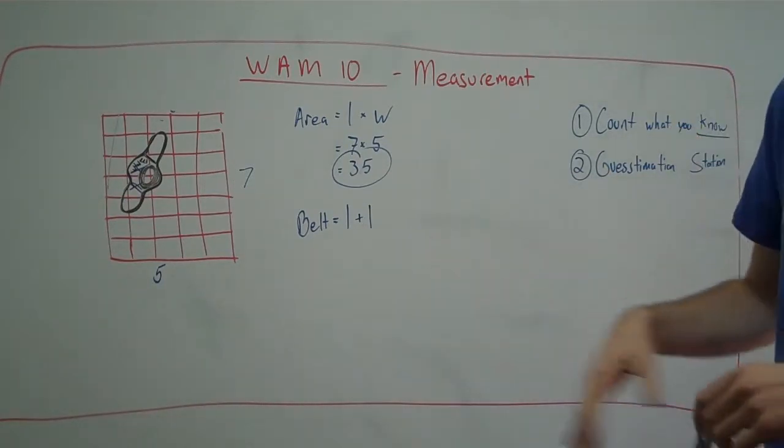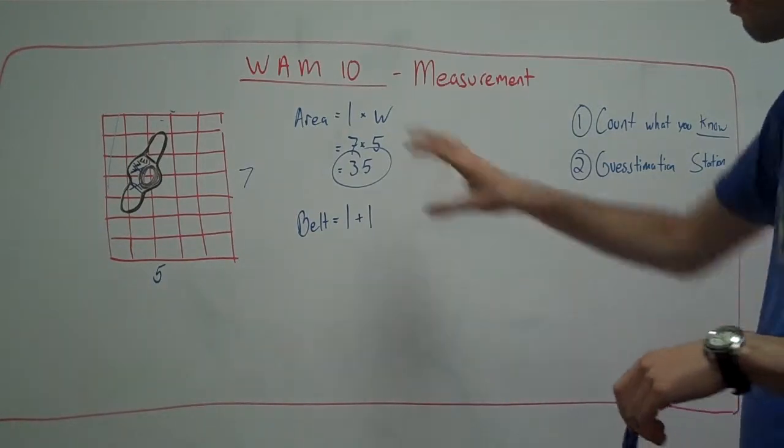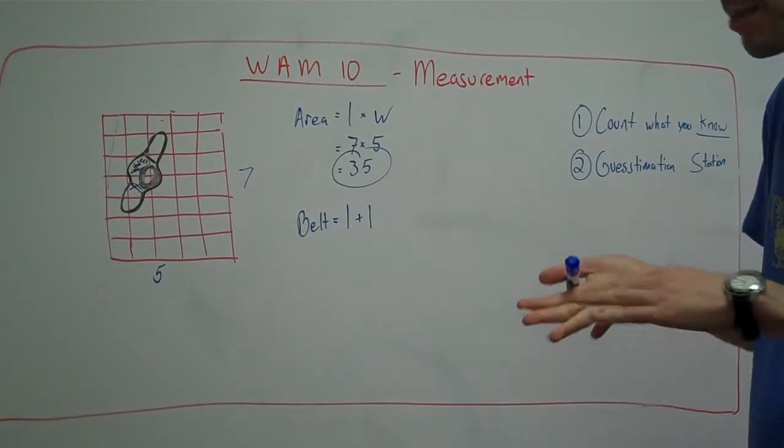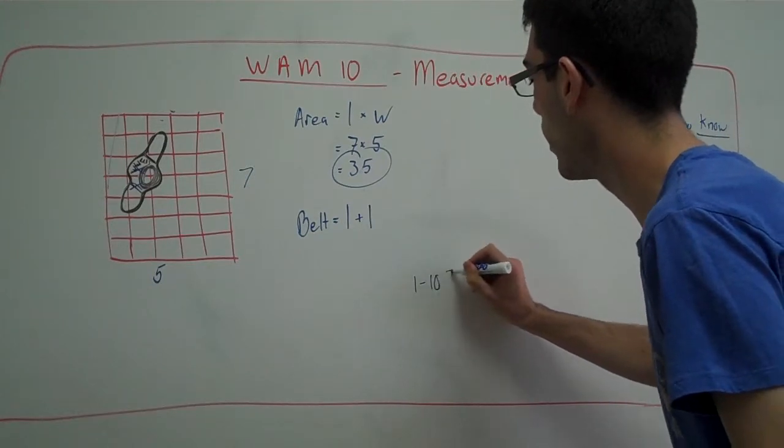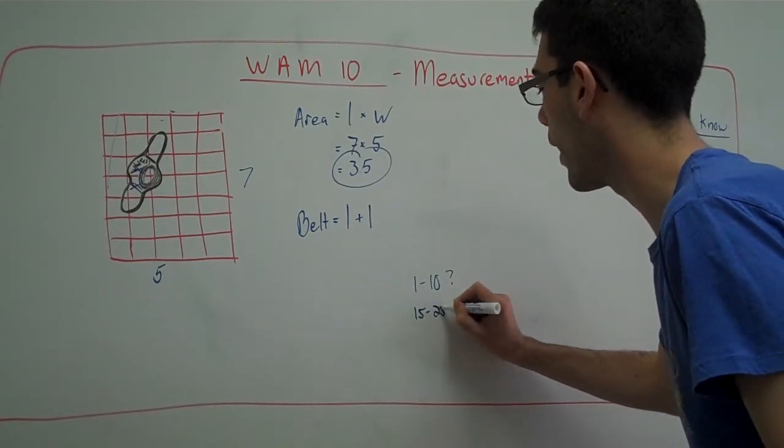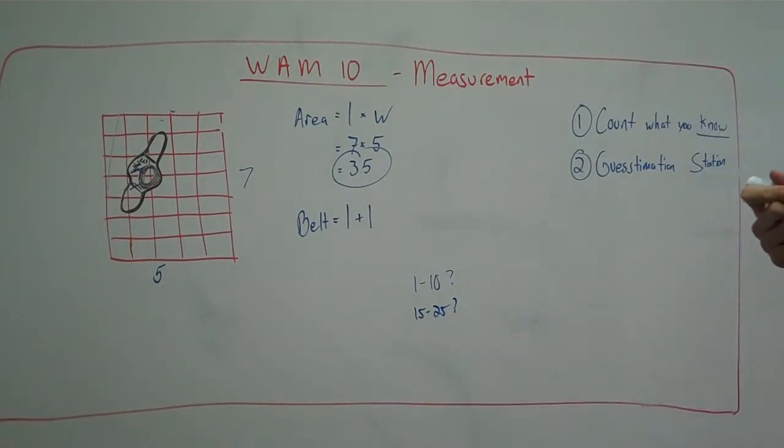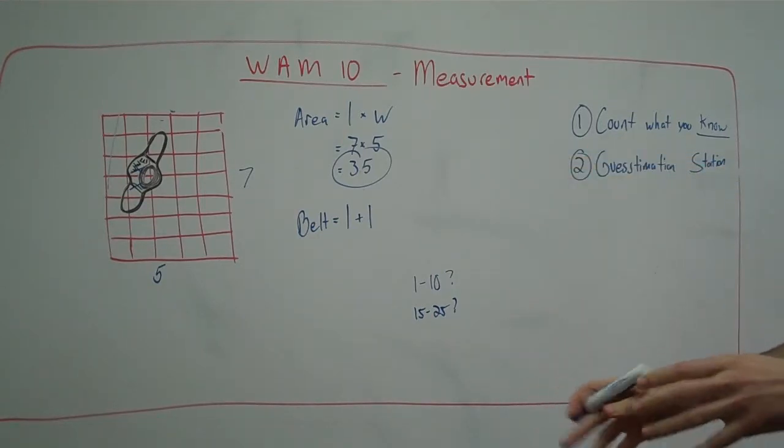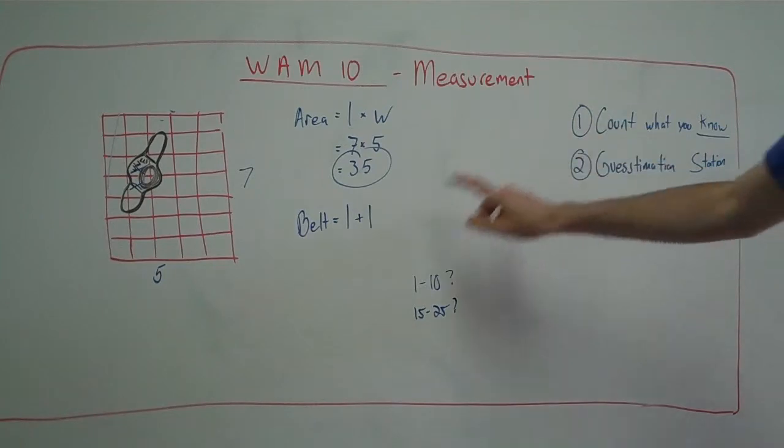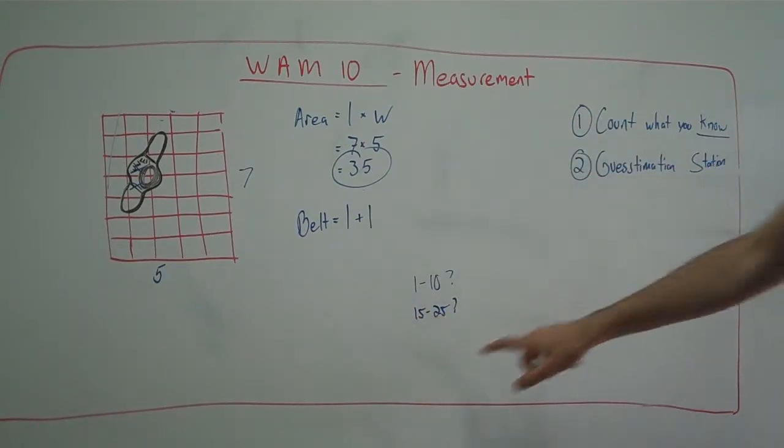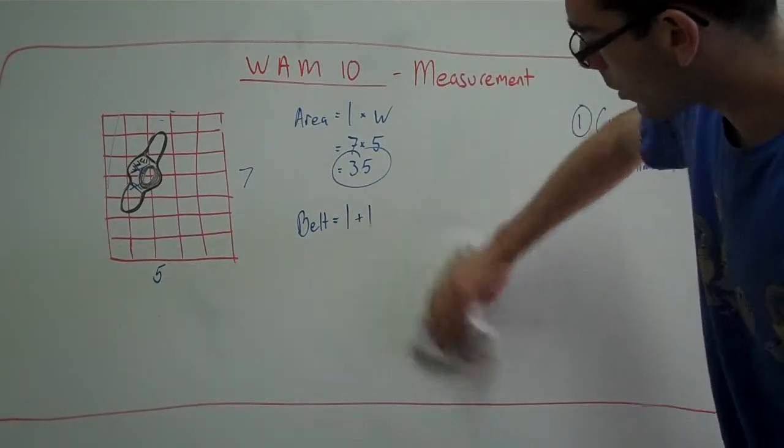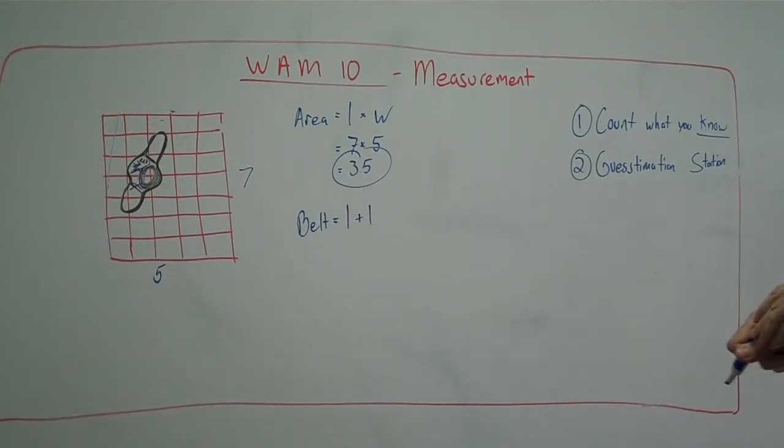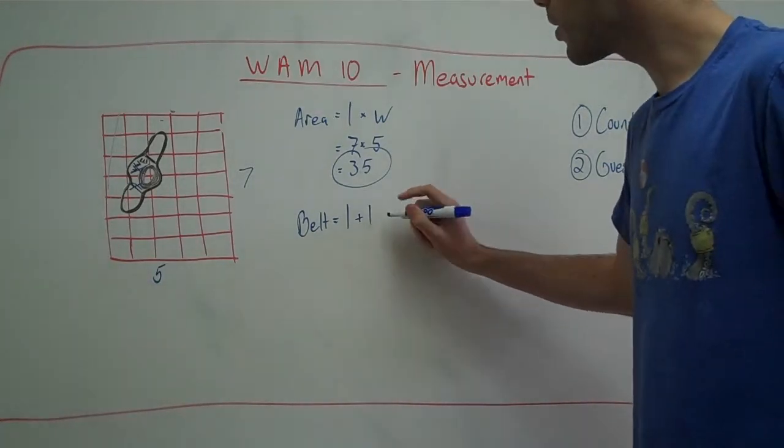That's kind of the neat thing about these questions on the exam. They give you ranges. Usually they'll post a question and they'll give you a multiple choice answer, A, B, C, or D, and they give you a range. Is it between 1 and 10? Is it between 15 and 25? And the reason they give you a range is because people use the guesstimation station step differently, and everyone falls somewhere within the range. But by counting what you know, you'll probably hit the lower end of the range, and guesstimation station will bring you up to what you need to get into for the actual part of the range.